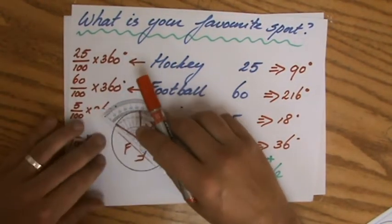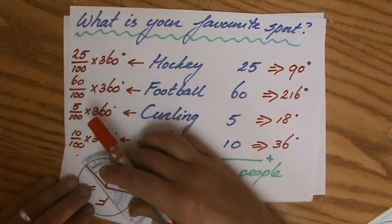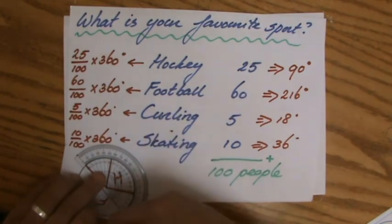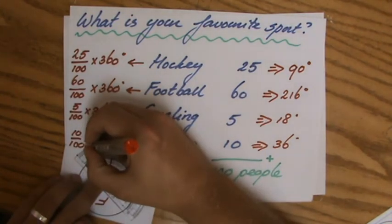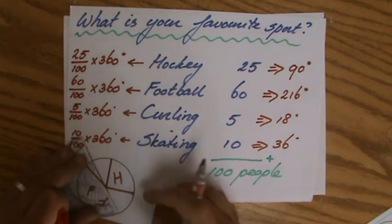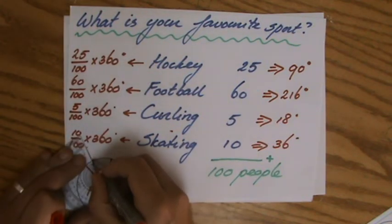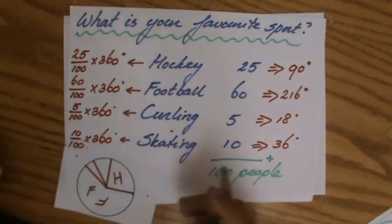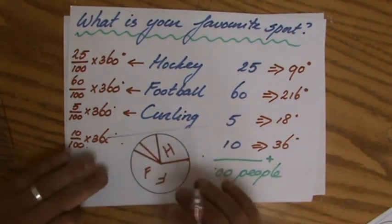With this marker it's almost impossible, but I'll do the best I can. 18 degrees, that is roughly there. Draw the angle 18 degrees, you'll know how to use a protractor, right? That was curling, so I'll put a C there.